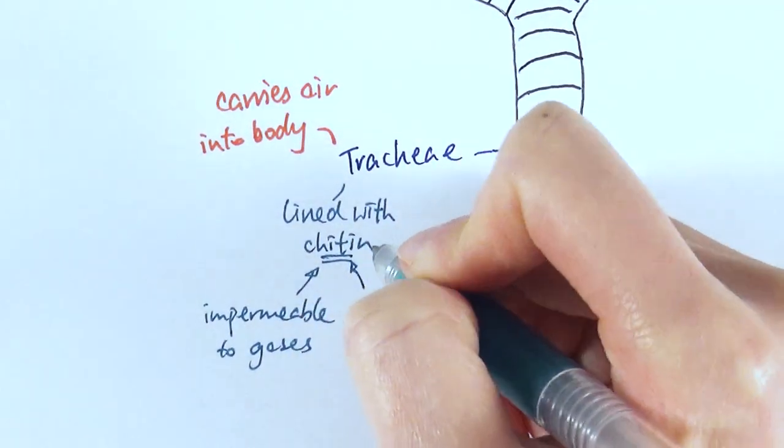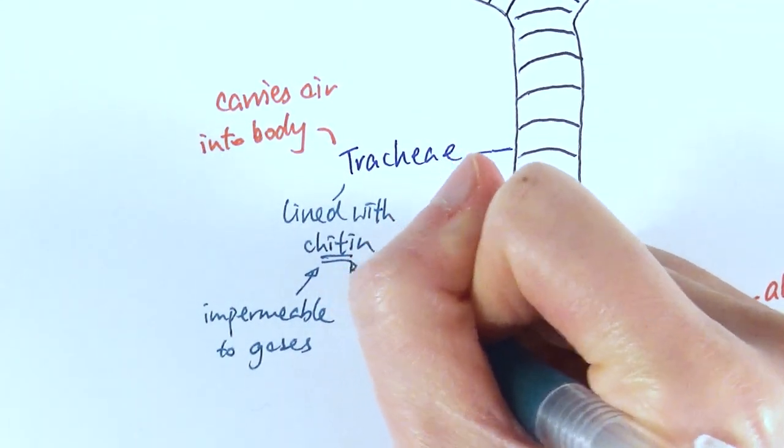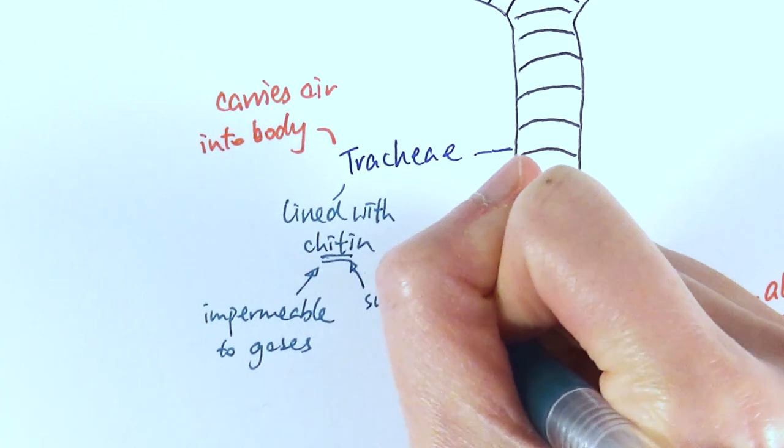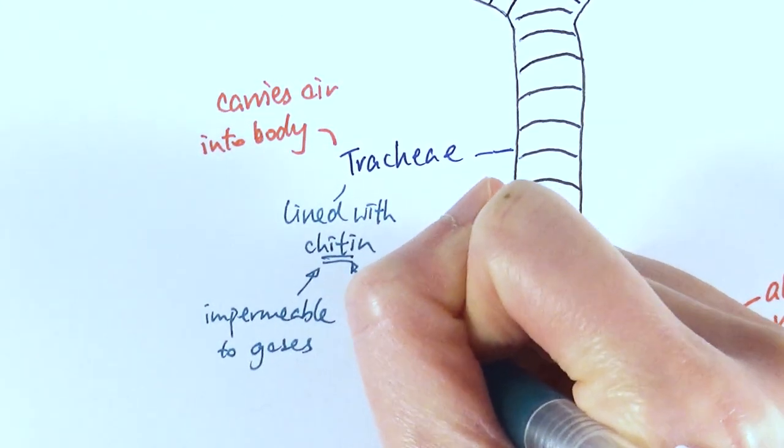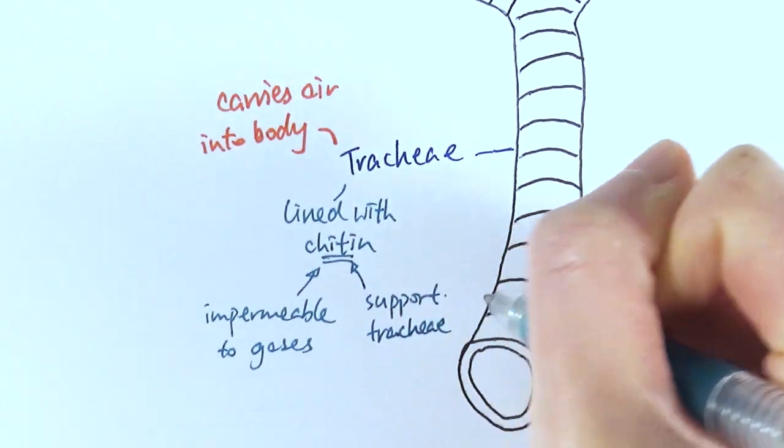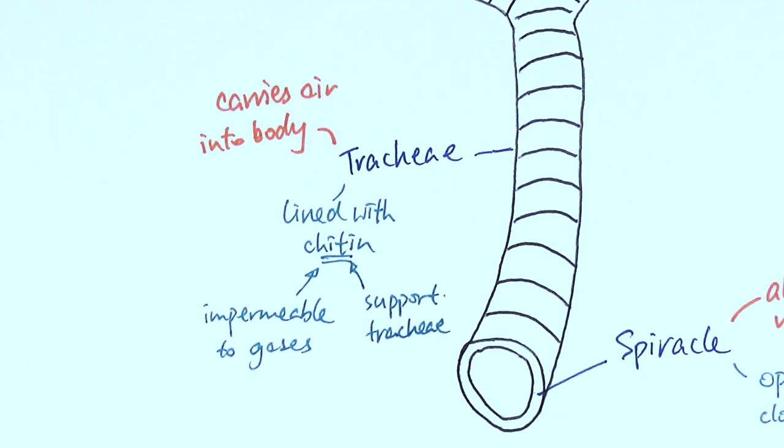But the main function of chitin is it's a quite tough chemical. So its main function is to support the trachea, to stop it from collapsing. Very much like the C-shaped cartilage rings in our own trachea which supports and keeps it open to make sure it doesn't collapse. So that is the trachea.